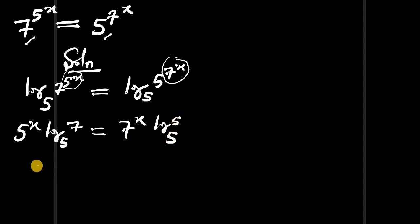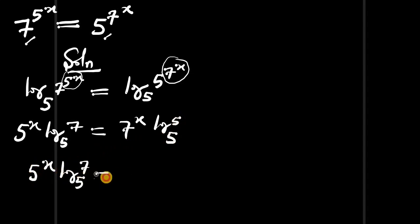This simplifies to 5^x · log_5(7) = 7^x, because log_5(5) equals 1.